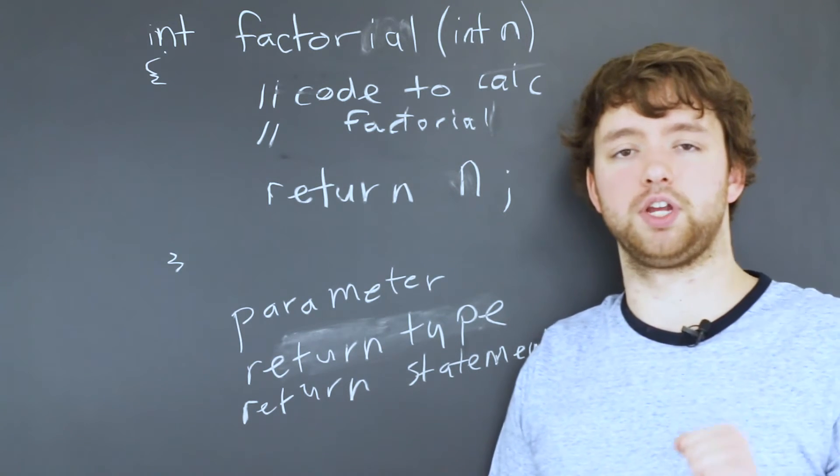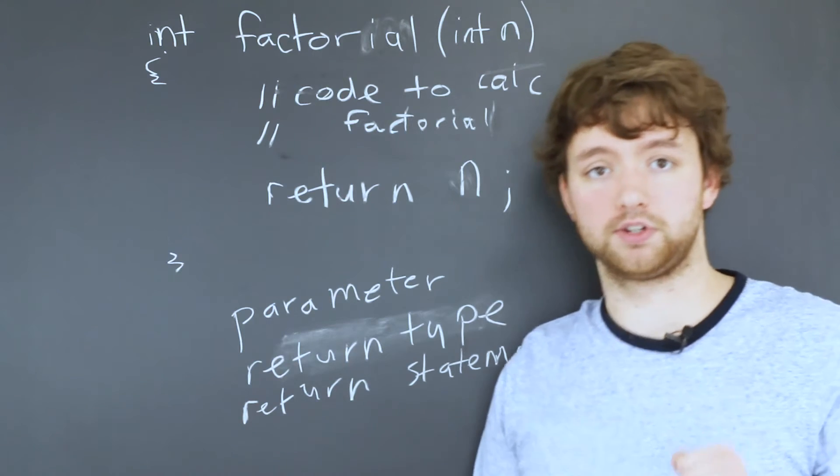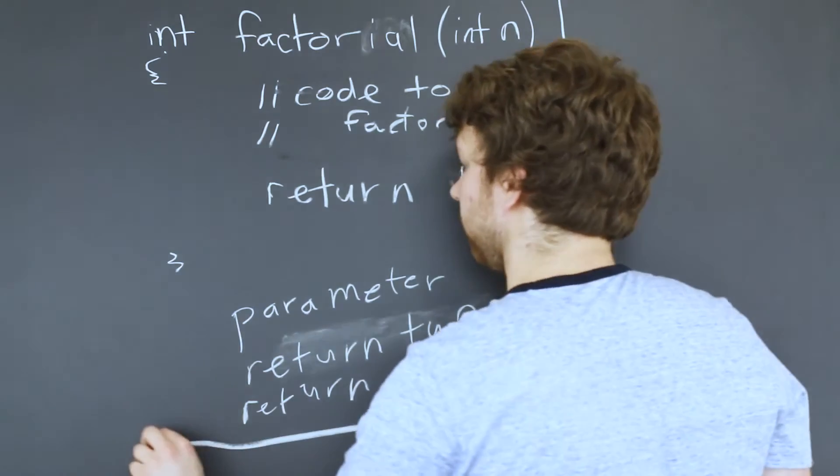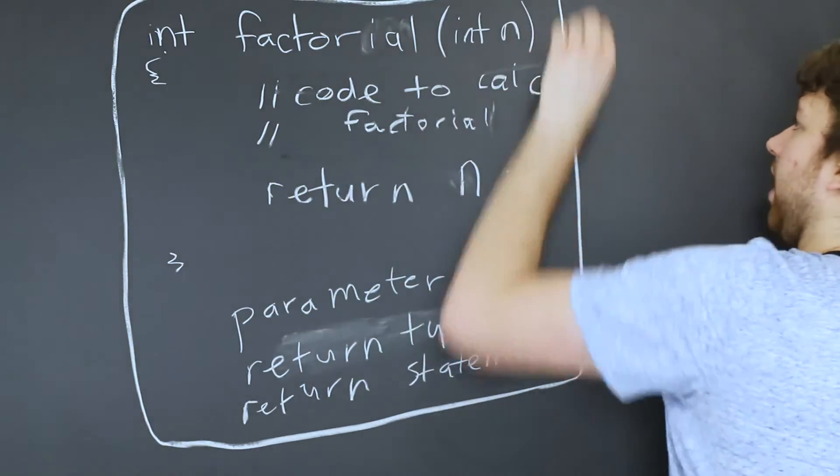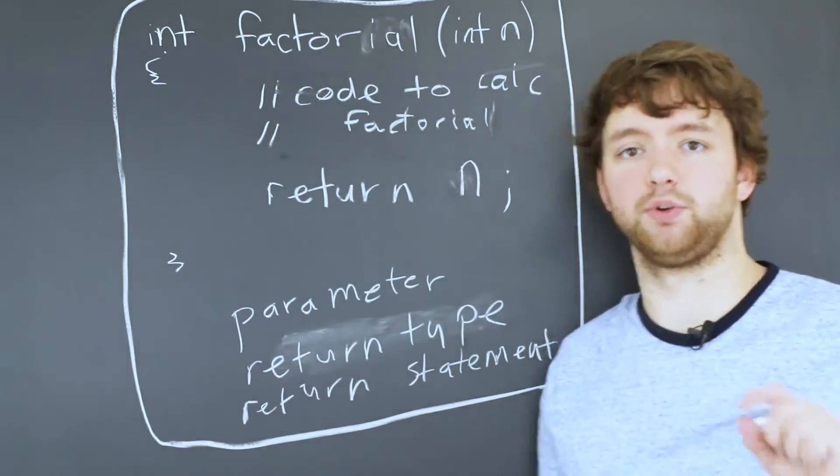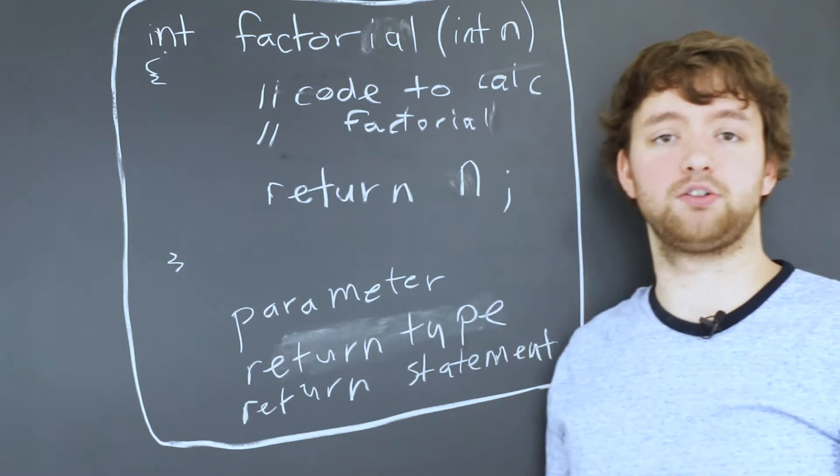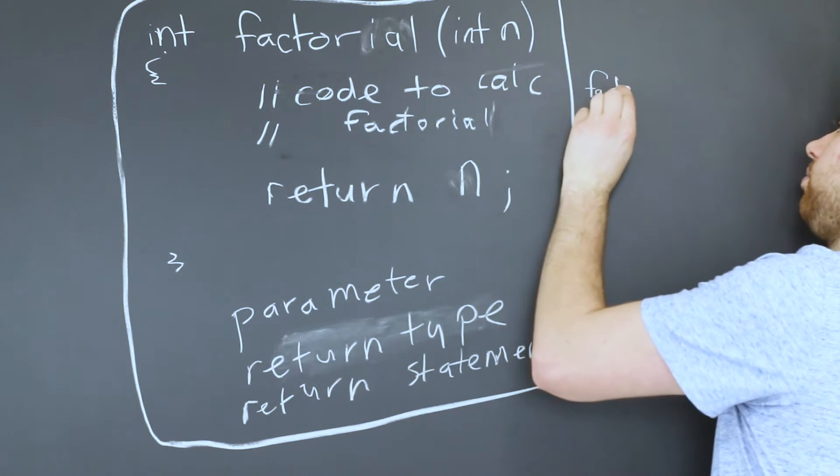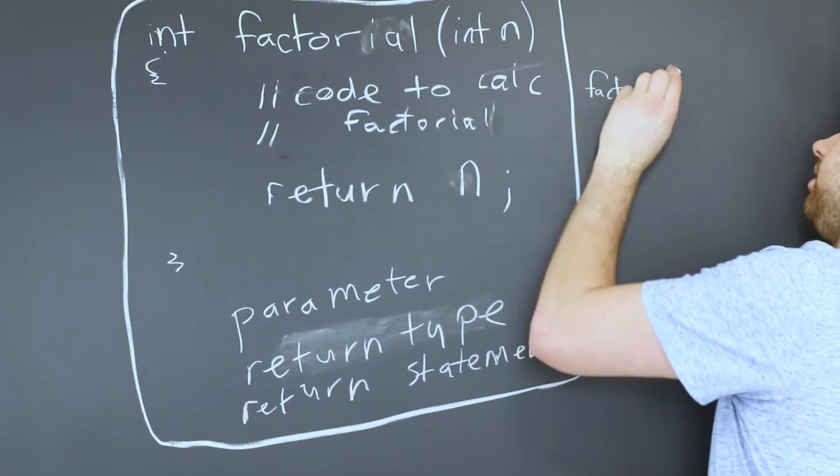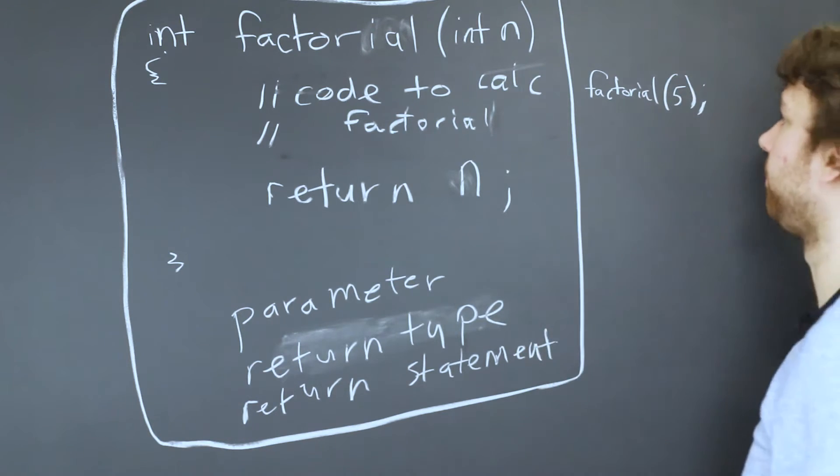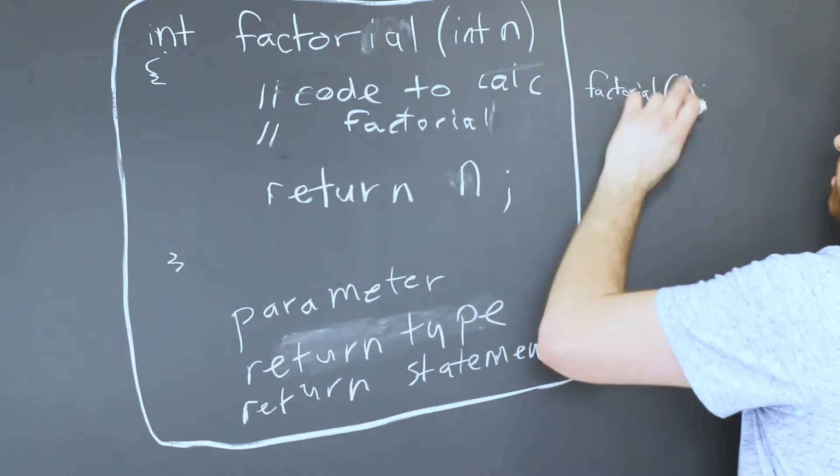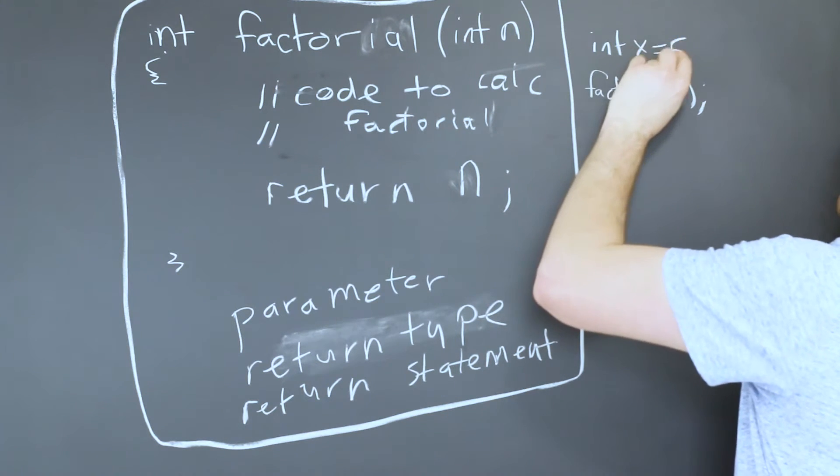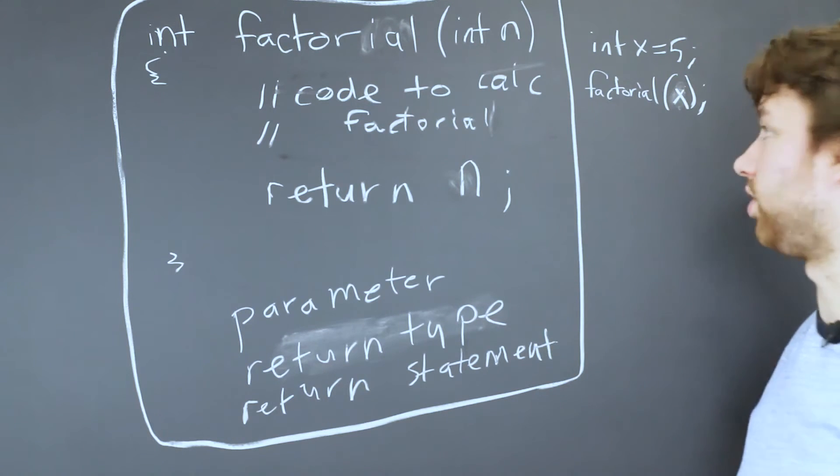Okay the next thing you need to understand is invoking the function. So if we just kind of put this to us an aside and we are now back in our main function or some other function whatever it is somewhere in our code we need a factorial of some number. Well we can just call this by saying factorial and pass in the value five for example. Or even better let's say we have a variable int x equals five and we pass in x. That works just the same.